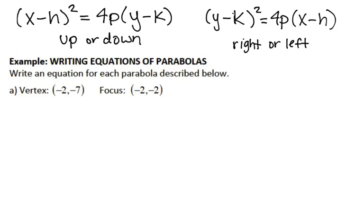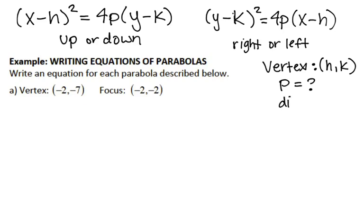In order to write the equation, there are a couple pieces of information that you need. You need to know your vertex because your vertex is h and k. You need to know what p is — p is the distance from your vertex to your focus, and it is also the distance from your vertex to your directrix. You also need to know the direction.